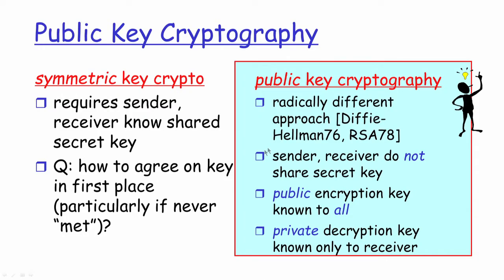In symmetric cryptography, as we saw in the previous module, the sender and the receiver basically know the same shared secret key which will be used for both encryption and decryption. The sender will use the shared symmetric key for encrypting to generate the ciphertext, and the receiver will use the same shared symmetric key for decrypting and then generate back the original plaintext. But the question that comes in is: how do the sender and the receiver agree in the first place on what key to use for doing this encryption and decryption?